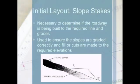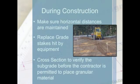Slope stakes are necessary to determine if the roadway is being built to the required line and grade. They are used to ensure that the slopes are graded correctly and that the cuts are made to the required elevations. The picture below illustrates the typical installation of a slope stake. As the work progresses and the cuts and fills become more pronounced, care should be taken that horizontal distances are maintained. Due to the construction environment, the surveyor must accept that grade stakes will be hit by equipment and will need to be replaced throughout the duration of the project. Once the cut and fill grading has brought the work to the proposed subgrade, it must be verified using cross slopes before additional material is placed.